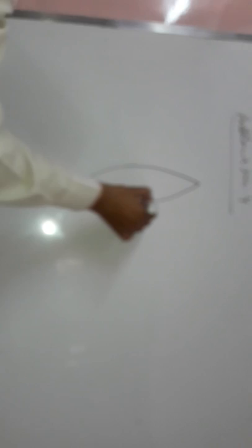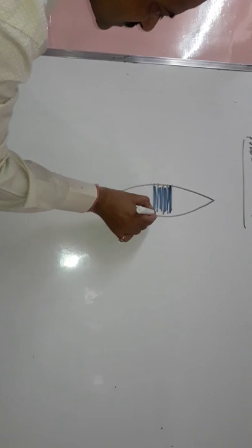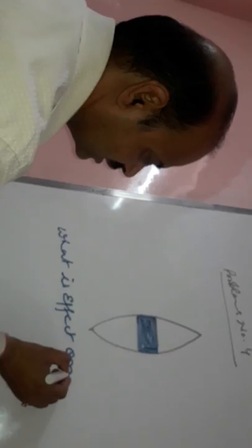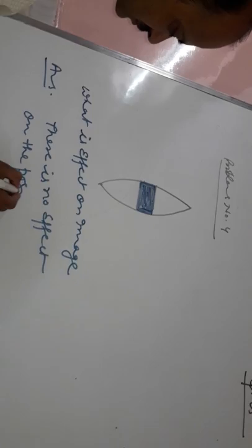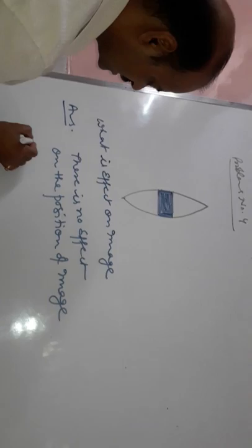Problem number 4. If a lens is covered partially by a black paper, what is effect on image? Answer: There is no effect on the position of image and magnification.